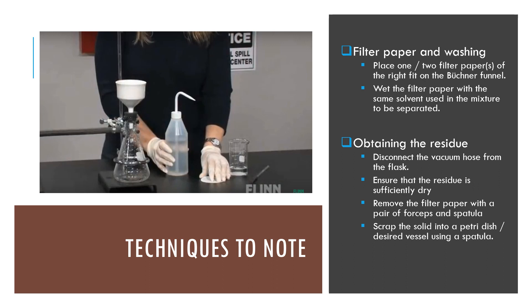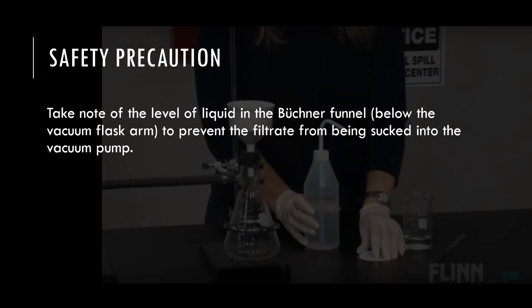Remove the filter paper with a pair of forceps and spatula. If you need to collect the residue, scrape the solid into a petri dish using a spatula. When using the vacuum filter, ensure that the level of liquid in the Buchner funnel is below the arm of the vacuum flask to prevent the filtrate from being sucked into the vacuum pump.